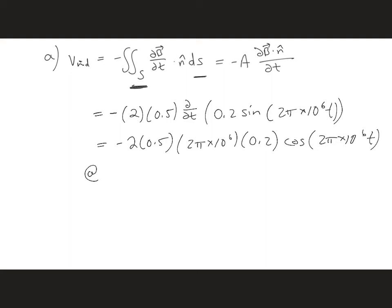And we want to evaluate this at omega t equal to 0. And in that case, we get minus 4 pi times 10 to the 5th volts.